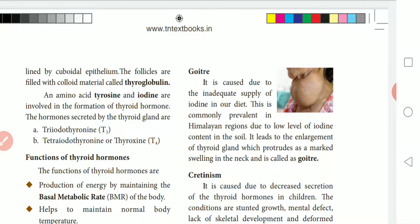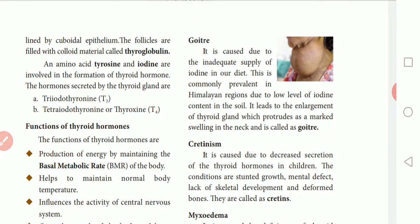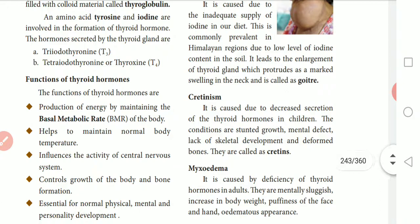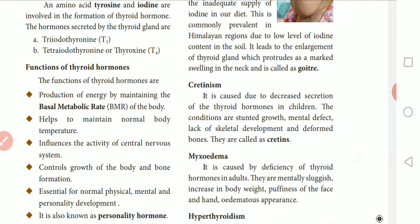Now let's look at the functions of thyroid hormone. Thyroid hormone regulates the production of energy by maintaining the basal metabolic rate, or BMR, of the body. You may recall from the 9th standard level how to calculate BMR: body mass in kilograms divided by height in meters squared gives a BMR index value.